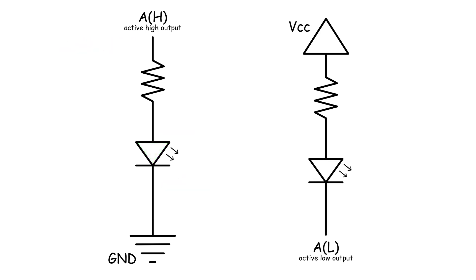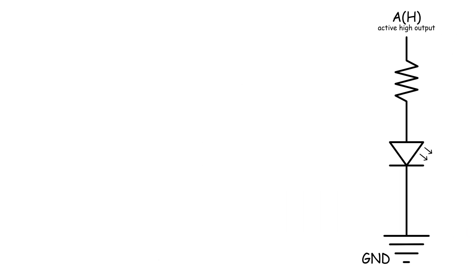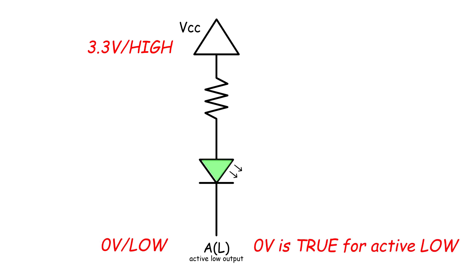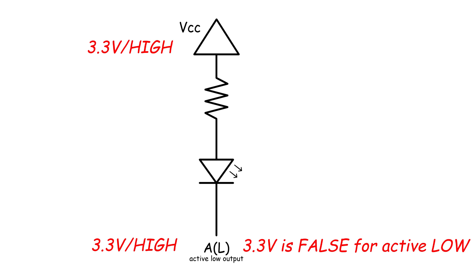The active low LED on the right will turn on if a low voltage, aka zero volts, is applied to the cathode of the LED. Notice that the anode is now connected directly to a high voltage and through a resistor. This works because it is a difference in voltage that will turn on the LED. If you have a high voltage on both sides of an LED, there is no difference in voltage and the LED will be off. Think of what the active low output actually means — the active low output is defined as true when it outputs zero volts. So when we connect an active low output to this LED circuit, the LED will turn on when zero volts is applied, aka the signal is true, and will turn off when a high voltage is applied, aka false.